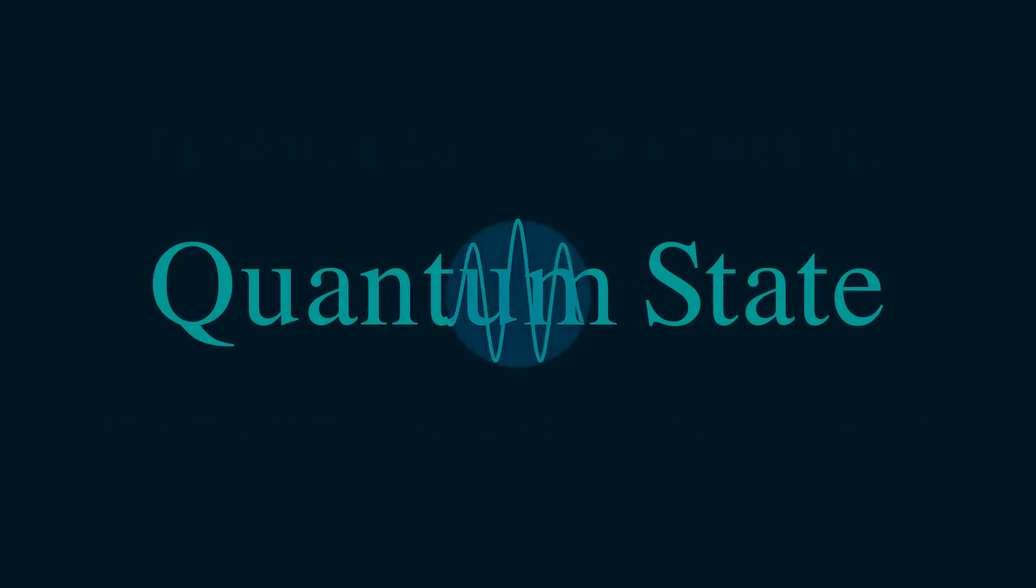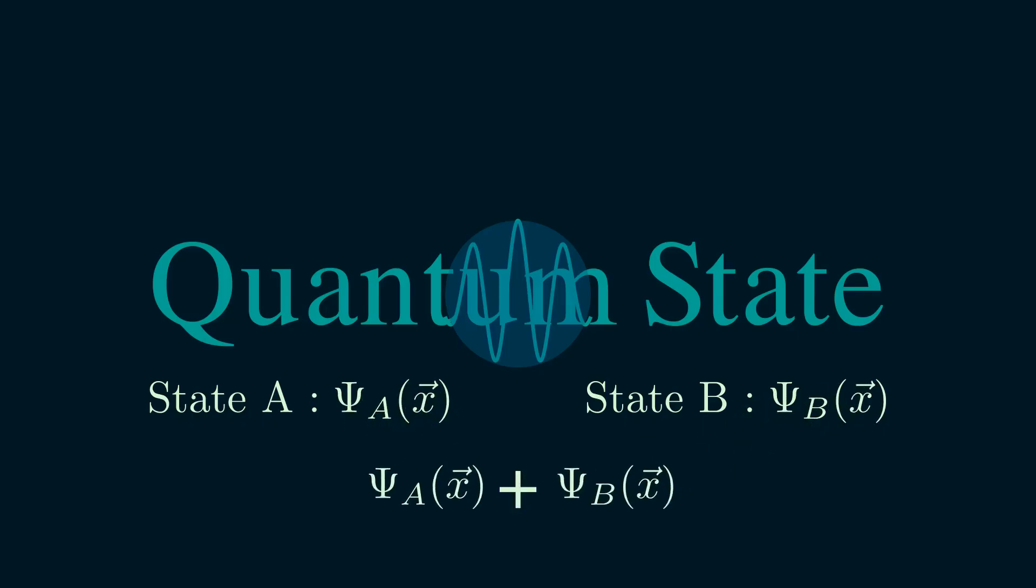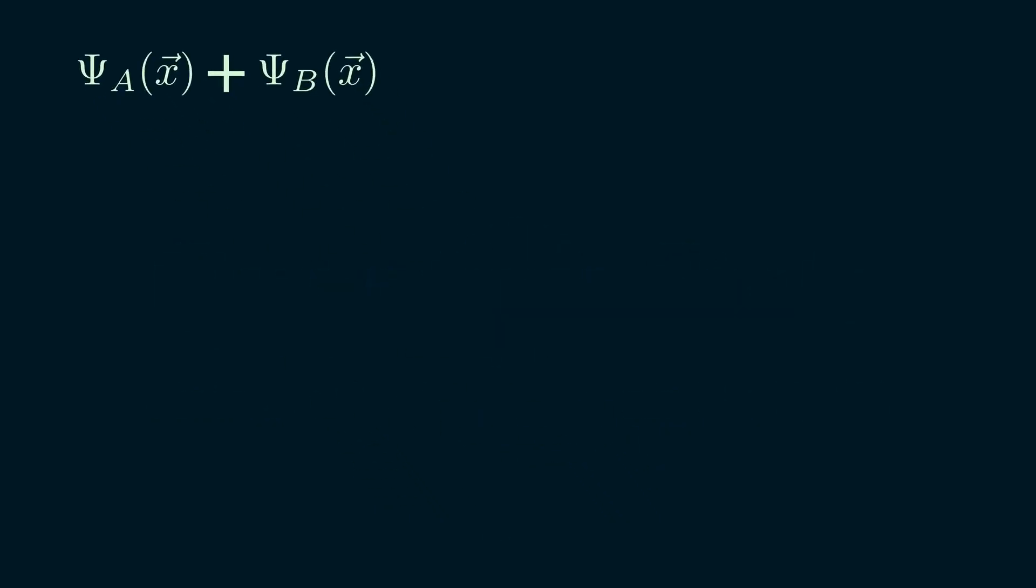In contrast, the quantum states are represented by wave functions. These live in a special kind of mathematical space called a Hilbert space. Here, adding two states together doesn't just give a new number, it gives a whole new state with its own physical reality. And that's what we call a superposition.